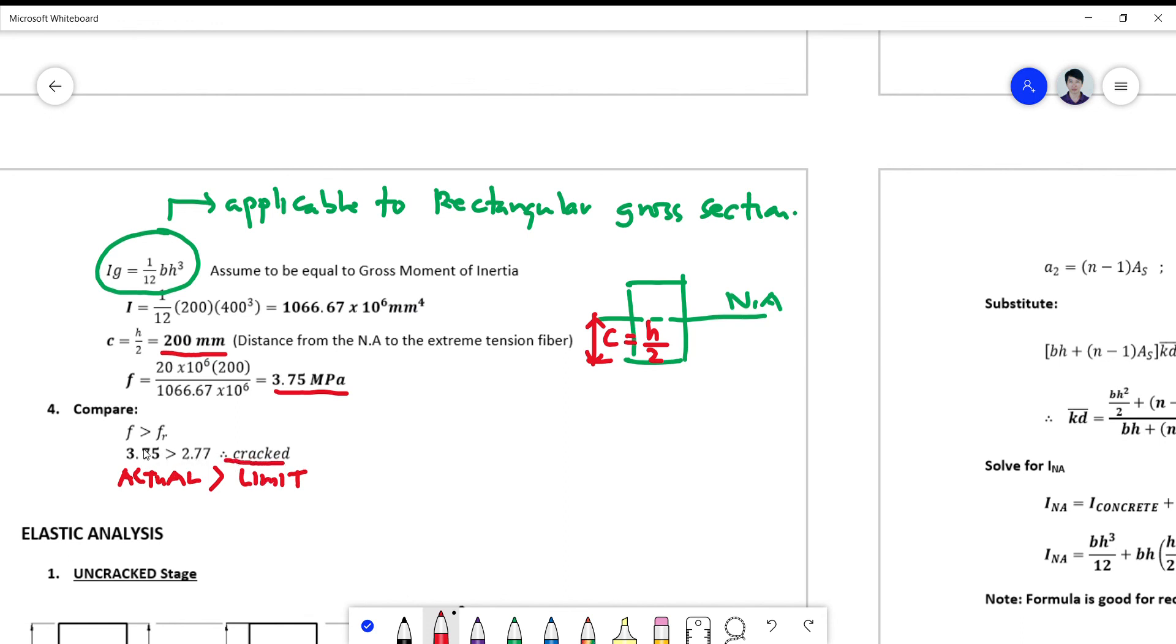If it so happened that this is less than that, then the section is not cracked. So question: what if they are equal? What if f is equal to fr? So still the conclusion is the concrete will crack, because it's on the exact value of your modulus of rupture.